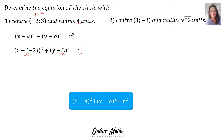In r's place we substitute 4. A minus times a minus is a plus, and we end with x plus 2 squared plus y minus 3 squared is equal to 16, since 4 squared is 16. You can stop there — your formula is now in standard form.